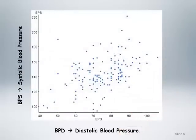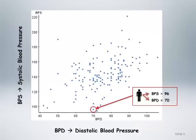The most useful graphical summary for examining correlation is the scatterplot diagram, shown here for systolic and diastolic blood pressure. Although this graph has the diastolic blood pressure on the horizontal or x-axis and the systolic blood pressure on the vertical or y-axis, the choice of axes in the context of examining correlation is arbitrary. Each point on the scatterplot diagram has an x-value and a y-value corresponding to the paired systolic and diastolic blood pressure values for each individual. For example, the circled point here corresponds to the individual having a systolic blood pressure of 96 and a diastolic blood pressure of 70.